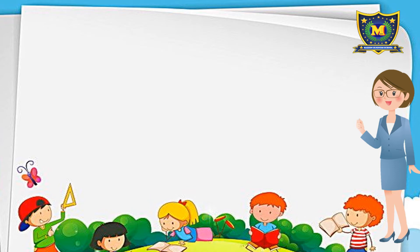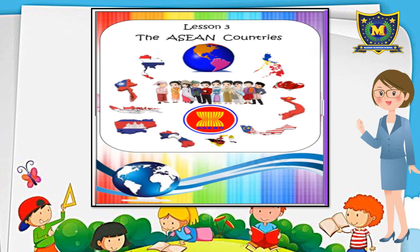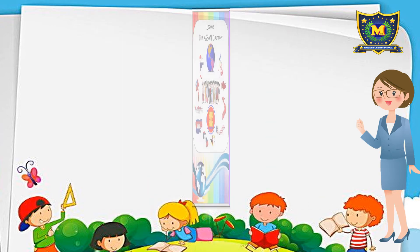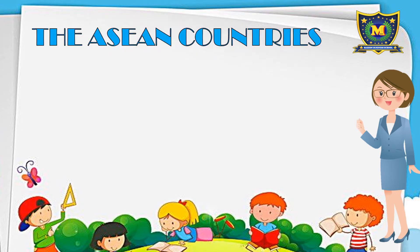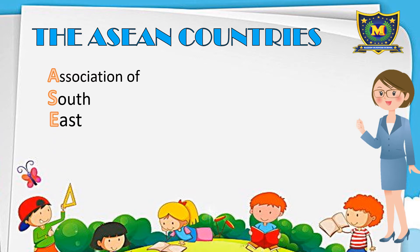Now today we will talk about the ASEAN countries. ASEAN stands for: A is for Association of, S is for South, E is for East, A is for Asian, and N is for Nation.